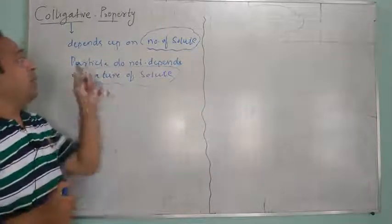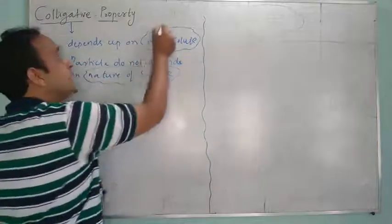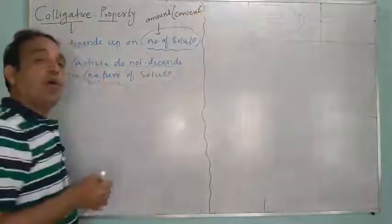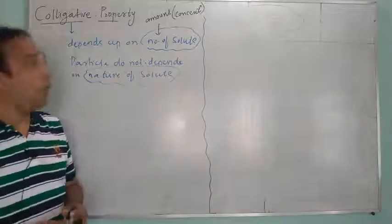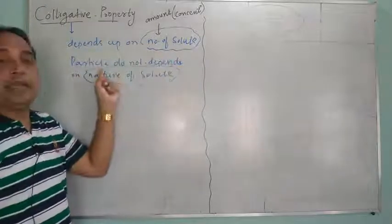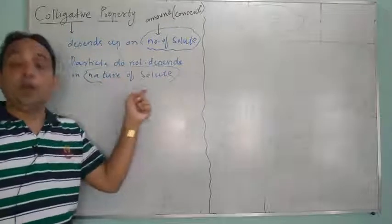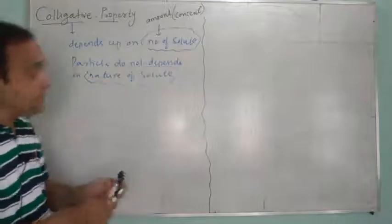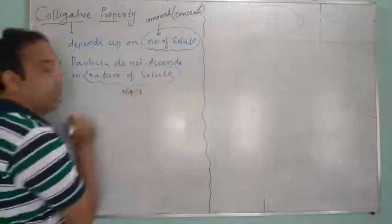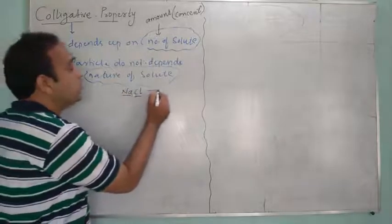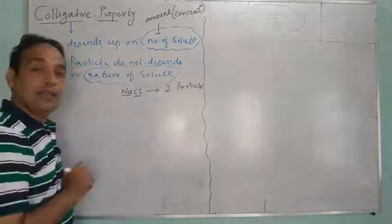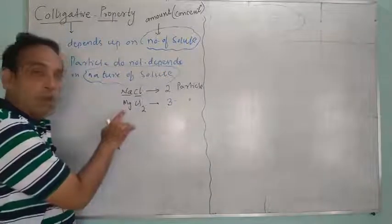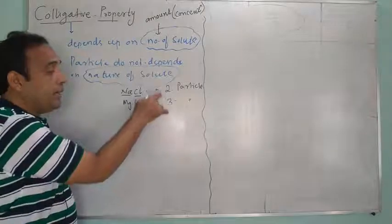What is colligative property? The property which depends upon number of solute particles — number meaning amount or concentration — but does not depend upon the nature of solute, whether that solute is solid, liquid, or gas. For example, NaCl contains one Na and one Cl, so total two particles. MgCl2 has one Mg and two Cl, giving three particles. So this property depends upon the number of particles.